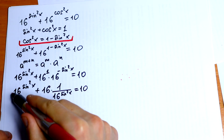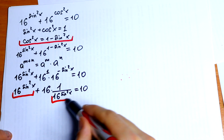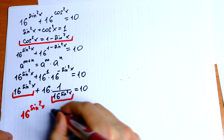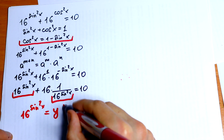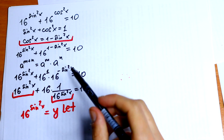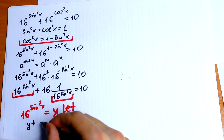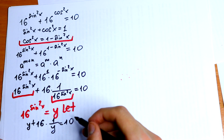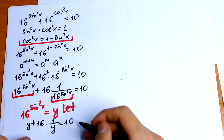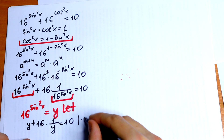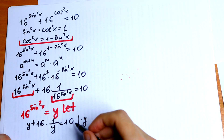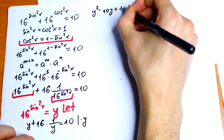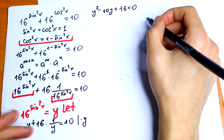We have 16 to the power sine squared of x appearing in both terms, so we can use a substitution. Let y equal 16 to the power sine squared of x. Then we have y plus 16 times 1 over y equals 10. Multiplying both sides by y gives us y squared minus 10y plus 16 equals 0.